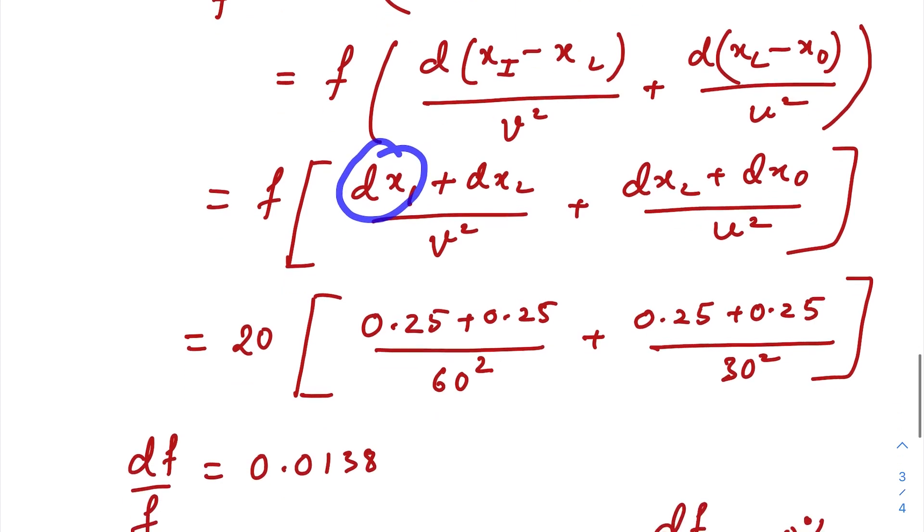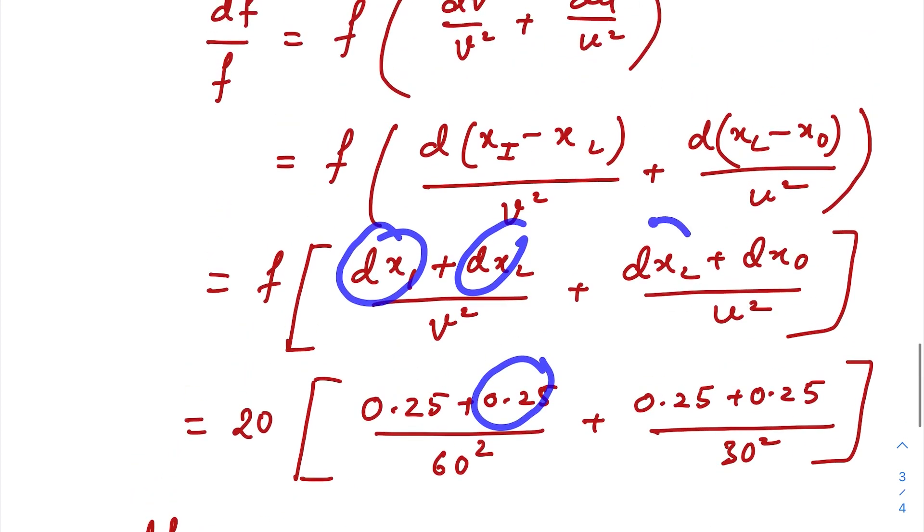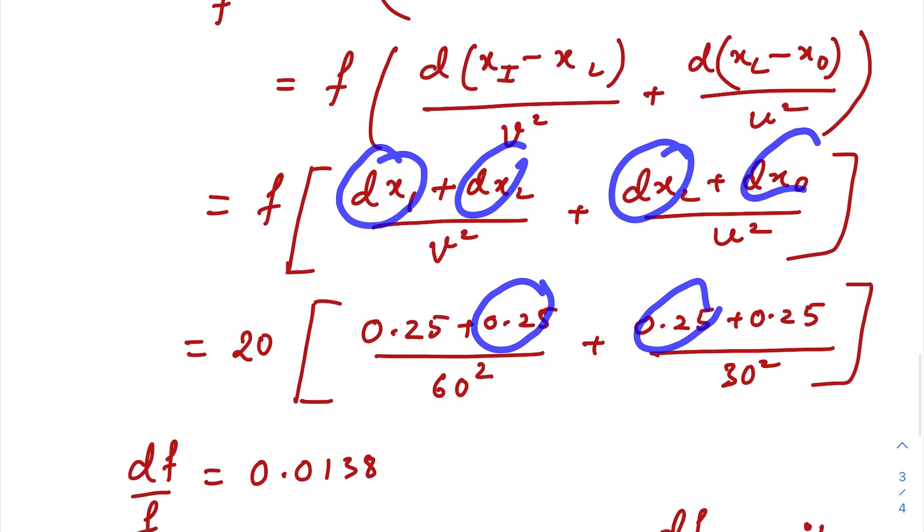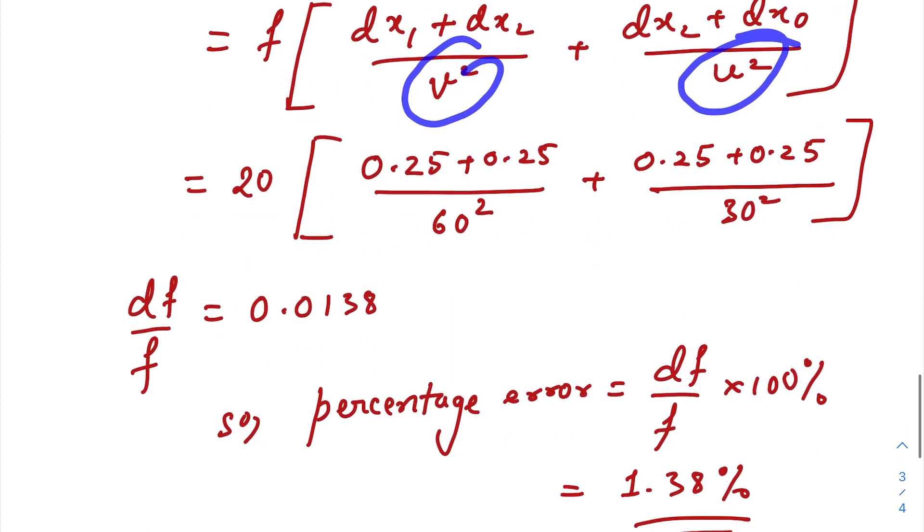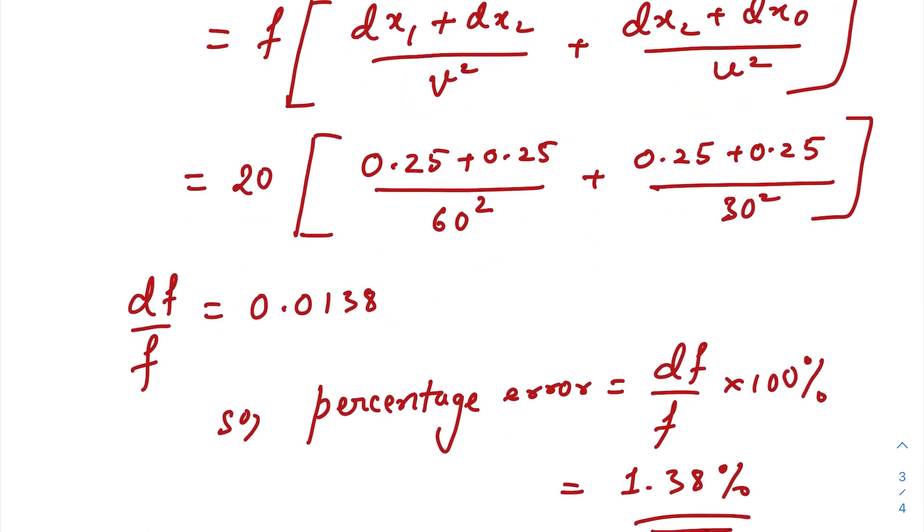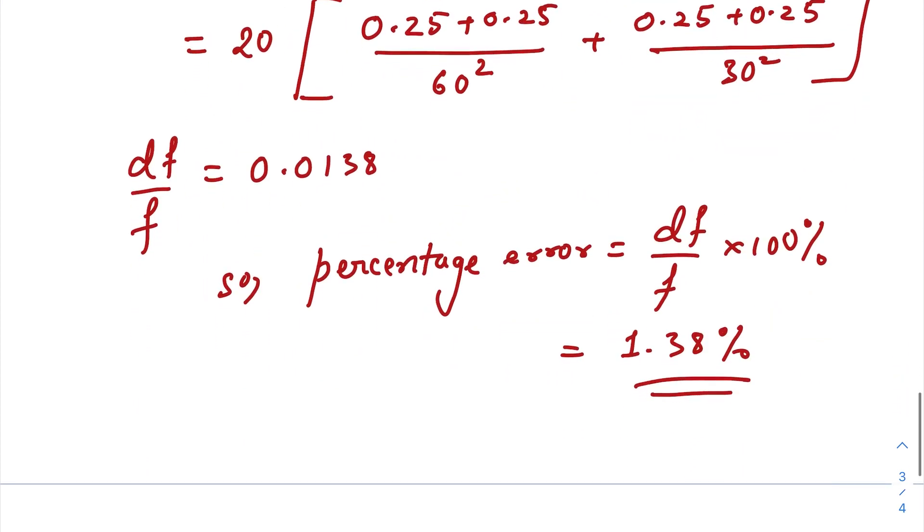So dx_i is 0.25, dx_l is 0.25, dx_l is 0.25, dx_o is also 0.25. Just put the values: f we already got as 20, v is 60, u is 30. Just do the calculation, you will get 0.0138. So the percentage error is 1.38%.